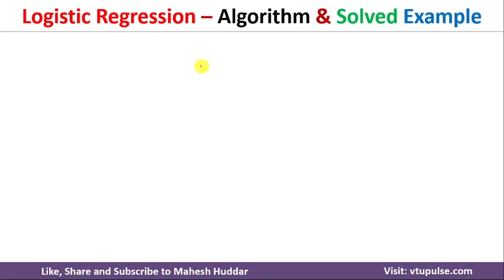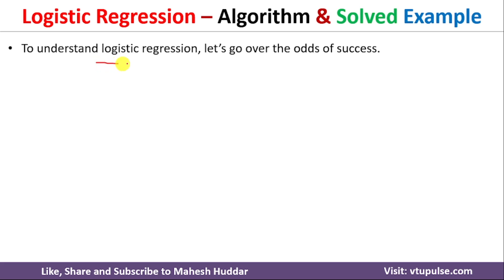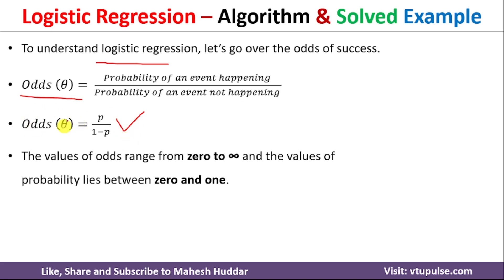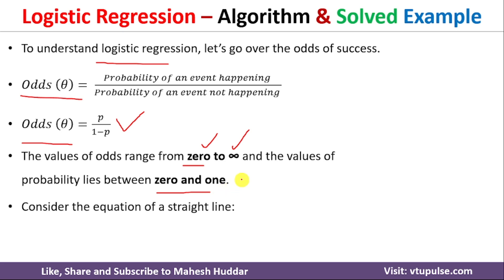Now we will understand the mathematical concept behind logistic regression. First, we need to understand odds of success. Odds of success equals the probability of an event happening divided by the probability of it not happening — that is, P divided by (1 minus P). The odds of success ranges from 0 to infinity, since probability ranges from 0 to 1: when P equals 0, odds equal 0; when P equals 1, odds become infinity. We also consider the straight line equation y equals beta_0 plus beta_1 times x, where beta_0 is the intercept and beta_1 is the coefficient of x.